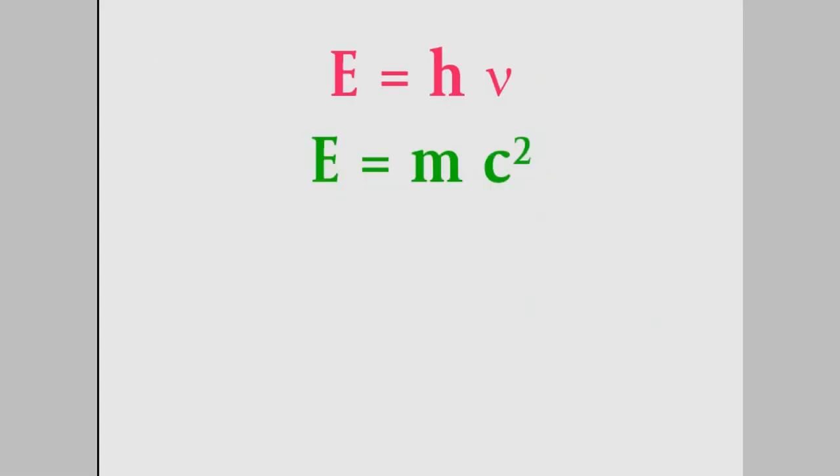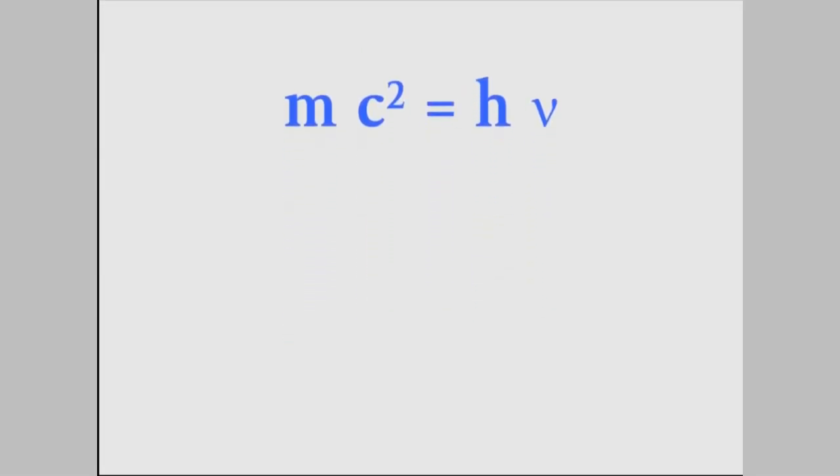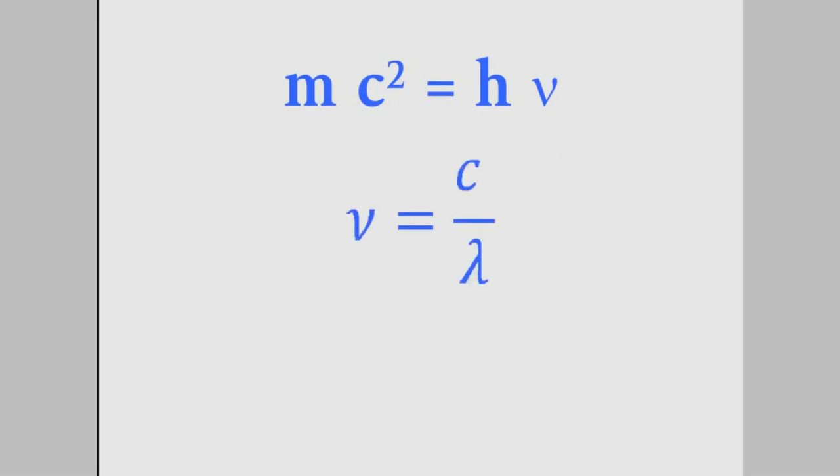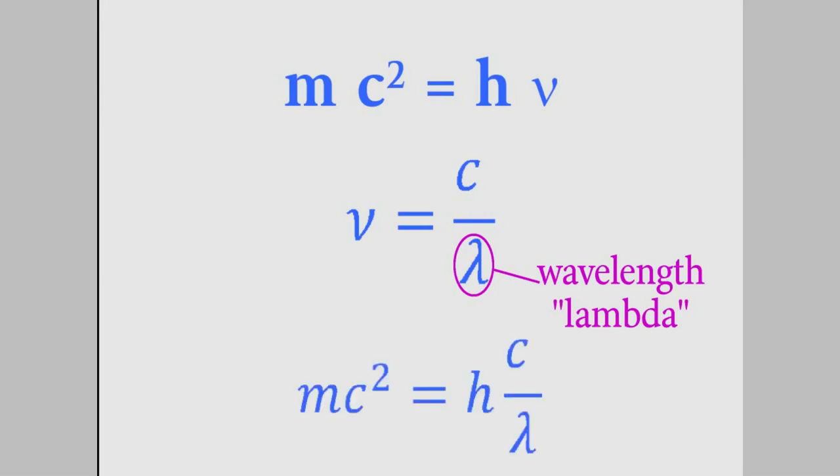Anyway, since both equations have E on the left side, the right sides should be equal to each other. Now the right side here has frequency in it. But it's a little easier to picture a wave's wavelength instead of its frequency. So let's change this. It turns out that the frequency of a light wave is equal to c divided by the wavelength. Wavelength has the symbol, Greek letter lambda.